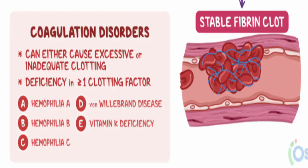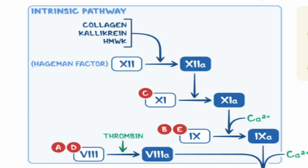Now that we have an overview of the cascade, we can see when and how clotting diseases can interfere with this process. Clotting diseases typically either increase or decrease production in one of these clotting factors. Perhaps the most well known is haemophilia, an inherited bleeding disorder in which the blood does not clot properly. This can lead to spontaneous bleeding as well as bleeding following injuries. There are three types of haemophilia, A through C, which all affect the intrinsic pathway. Haemophilia A through C affects clotting factors 8, 9, and 11 respectively.